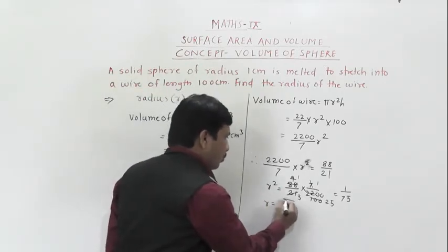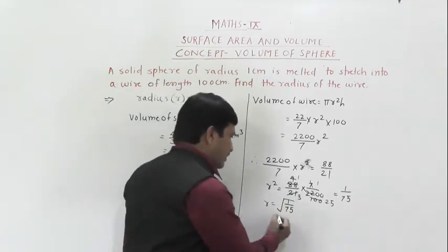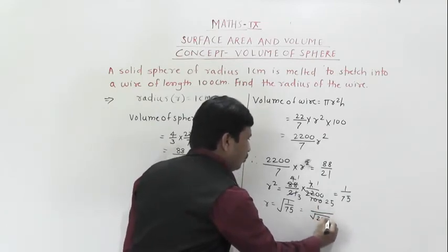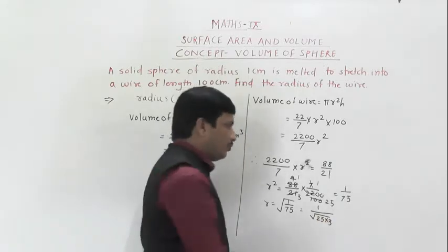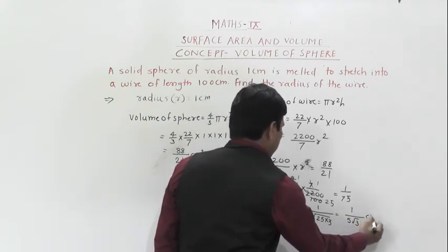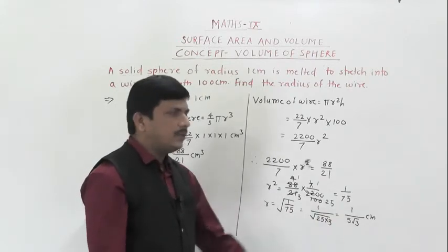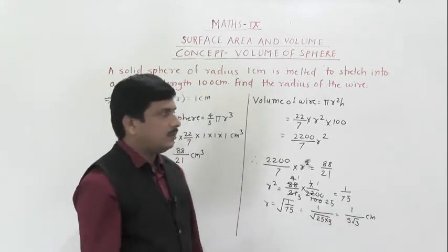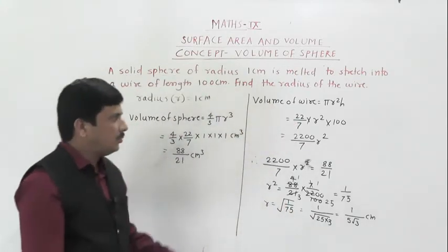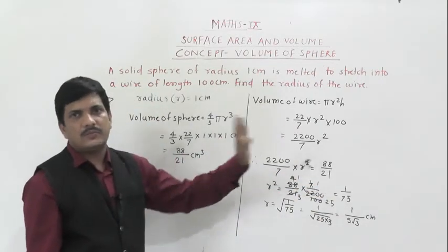Therefore r equals √(1/75). We can factorize: 75 = 25 × 3, so √(1/75) = 1/(5√3) centimeters. So 1/(5√3) centimeter is the radius of the cylindrical wire. In this problem, height was given and radius had to be found — the approach is the same as the first example.